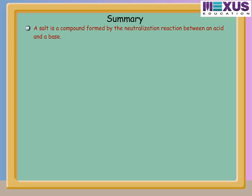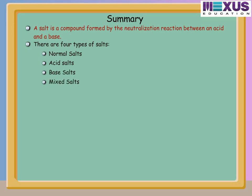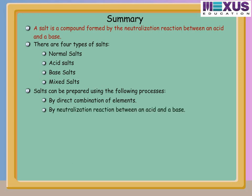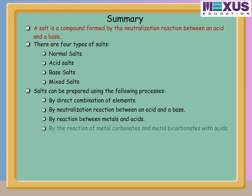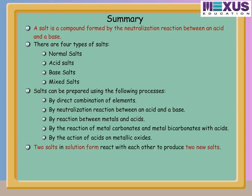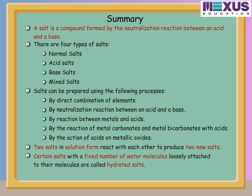To summarize: a salt is a compound formed by the neutralization reaction between an acid and a base. There are four types of salts — normal salts, acid salts, basic salts, and mixed salts. Salts can be prepared by direct combination of elements, neutralization reactions, reaction of metals with acids, reaction of metal carbonates or bicarbonates with acids, and by the action of acids on metallic oxides. Certain salts with fixed water molecules attached are called hydrated salts, and all salts have various important uses.